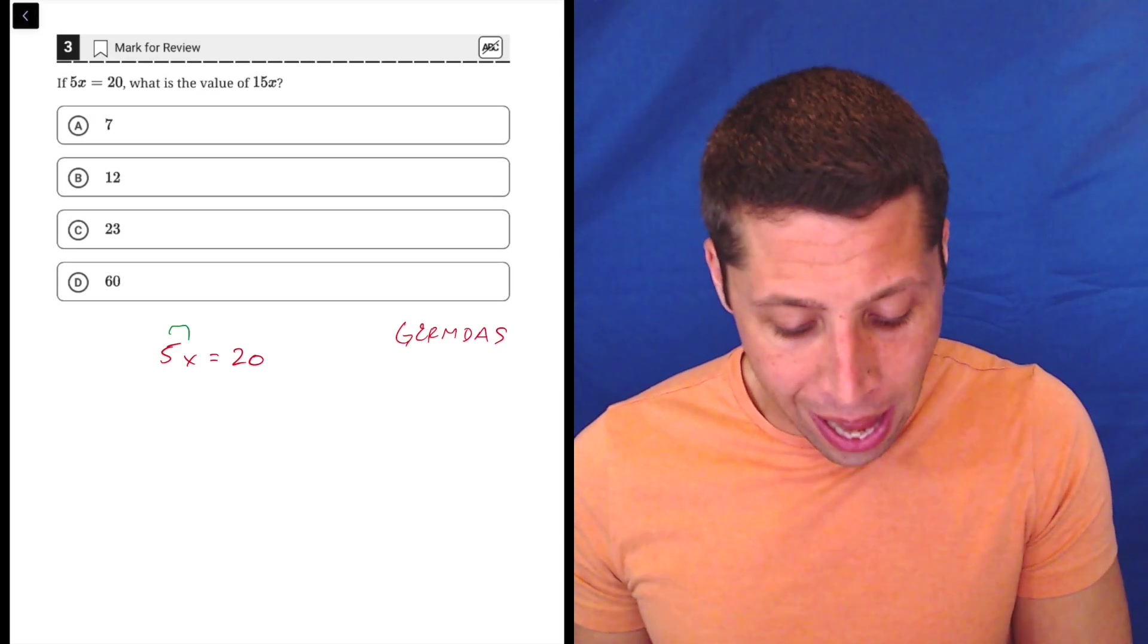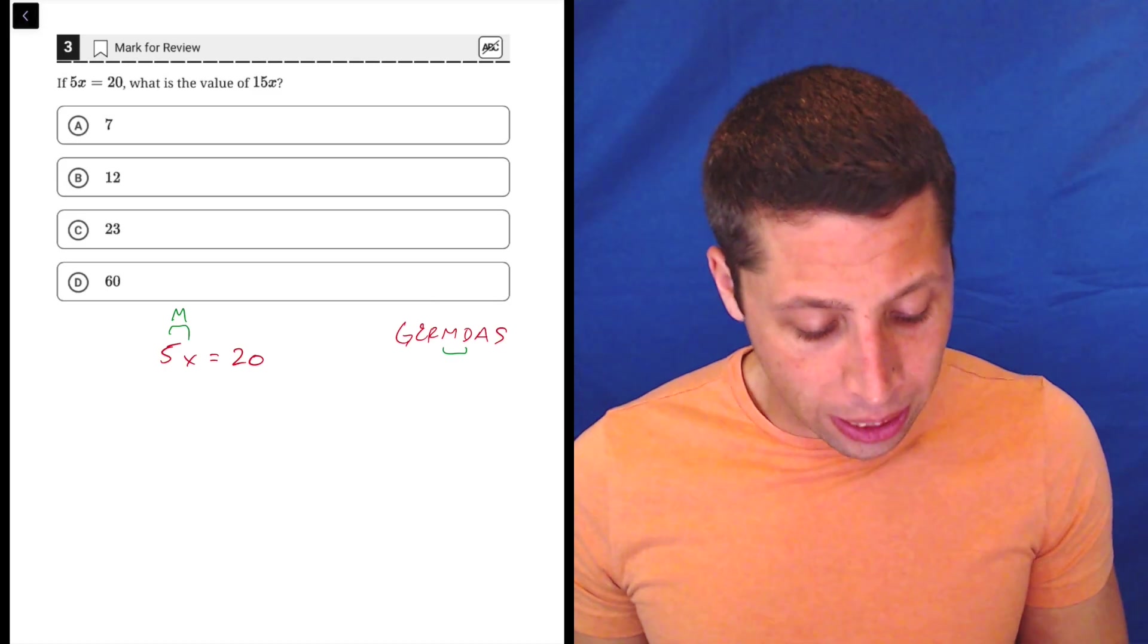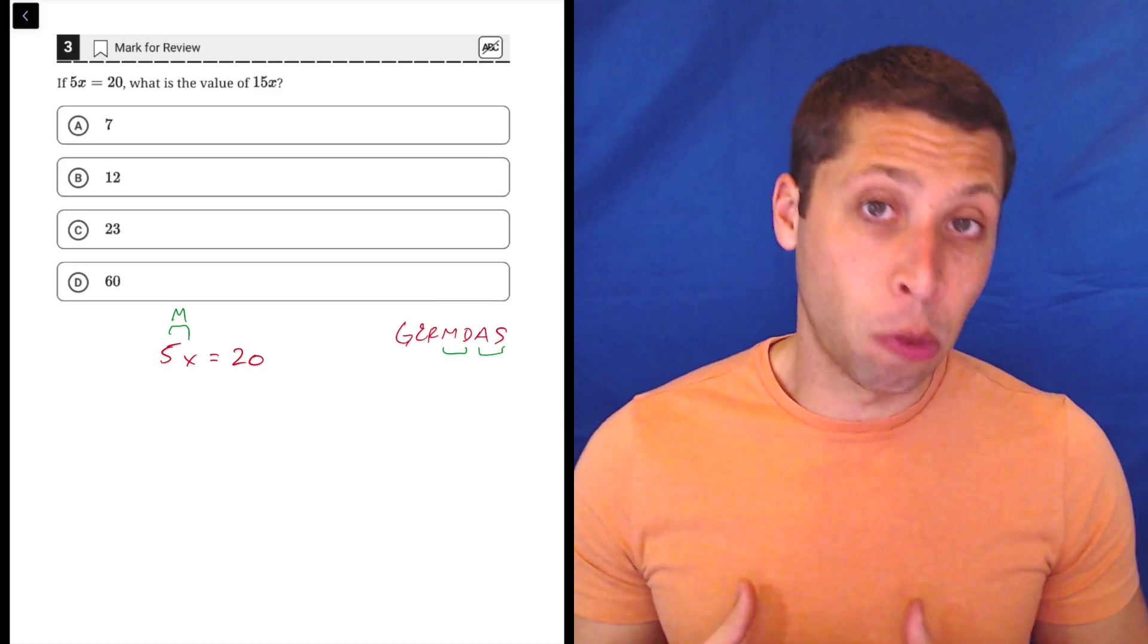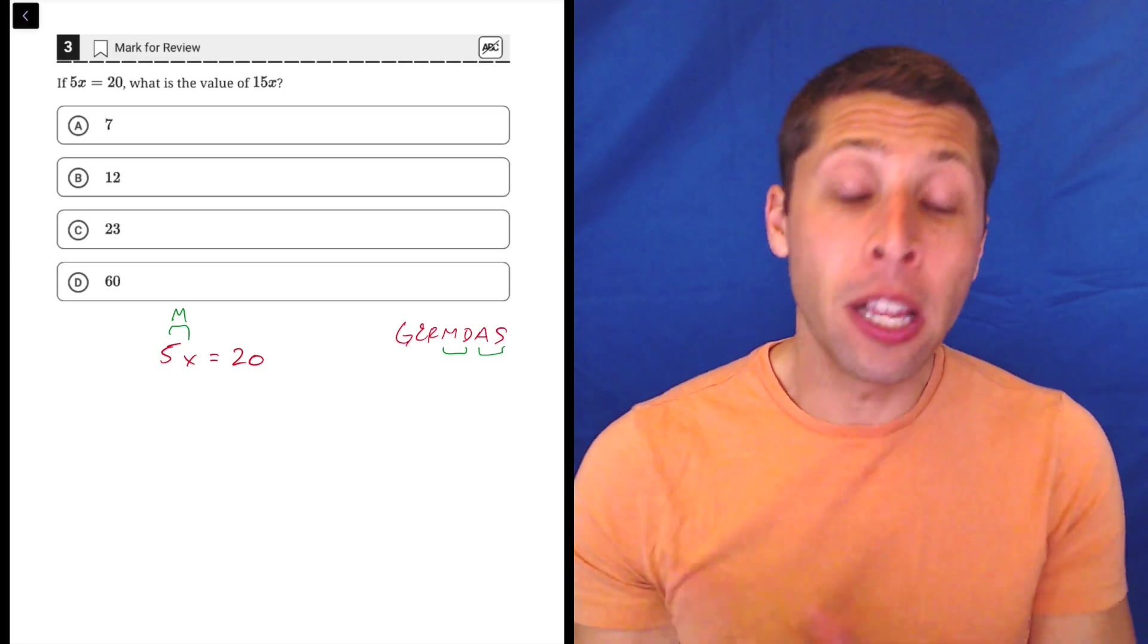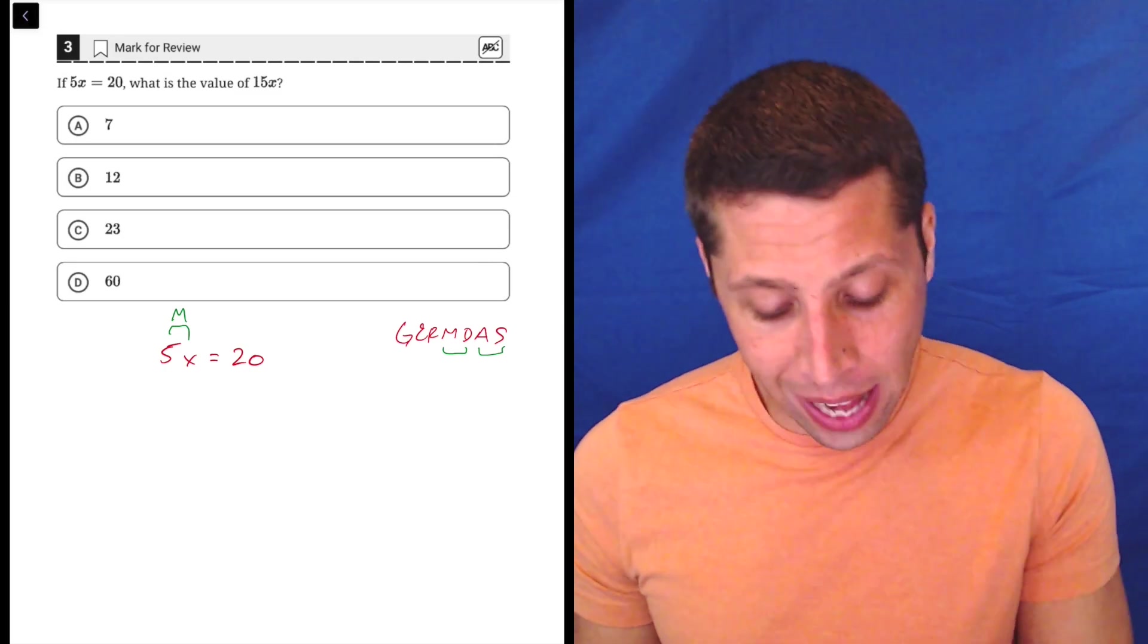But with GERMDAS, everything comes in pairs, right? Addition and subtraction, multiplication and division. So we're doing algebra and we're trying to strip things away from our variable. We need to do the opposite, so the opposite of multiplication is division. So that's how we're gonna make the 5 go away.